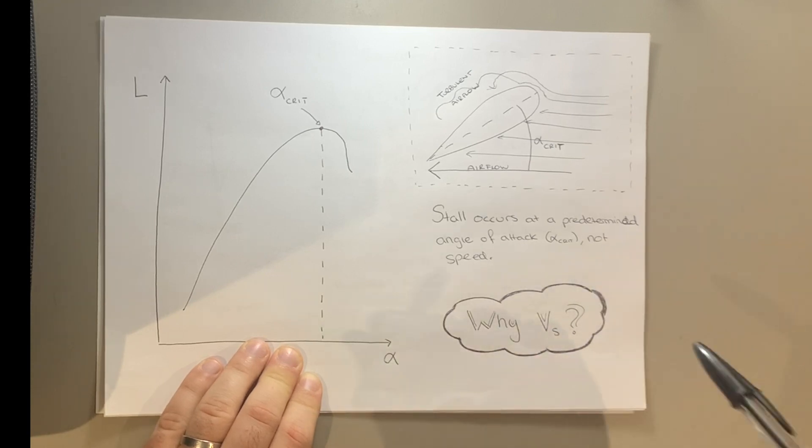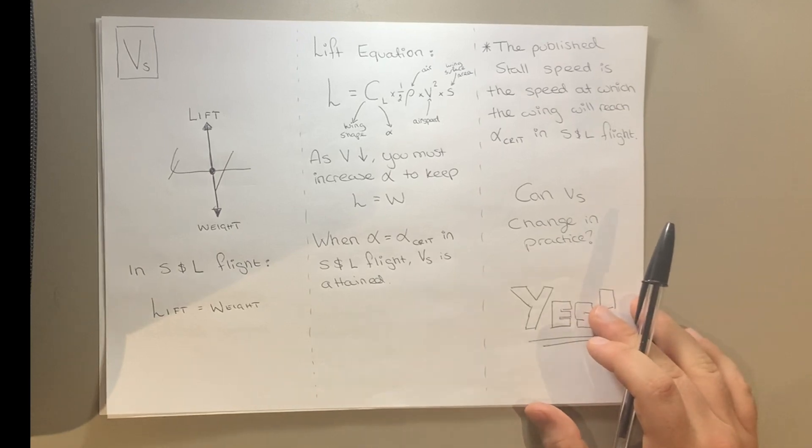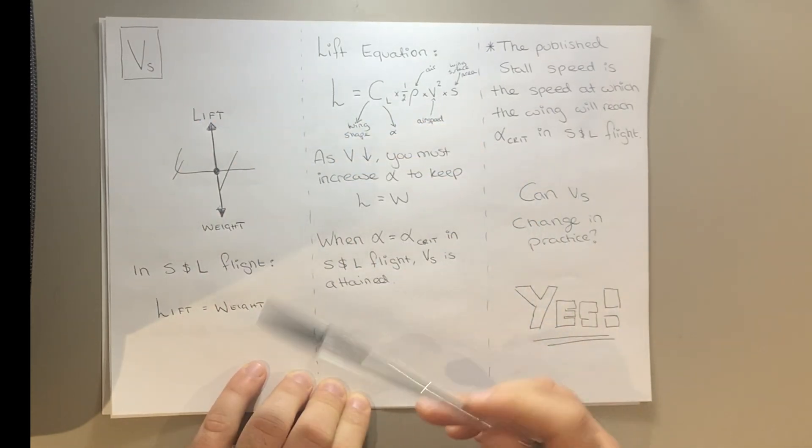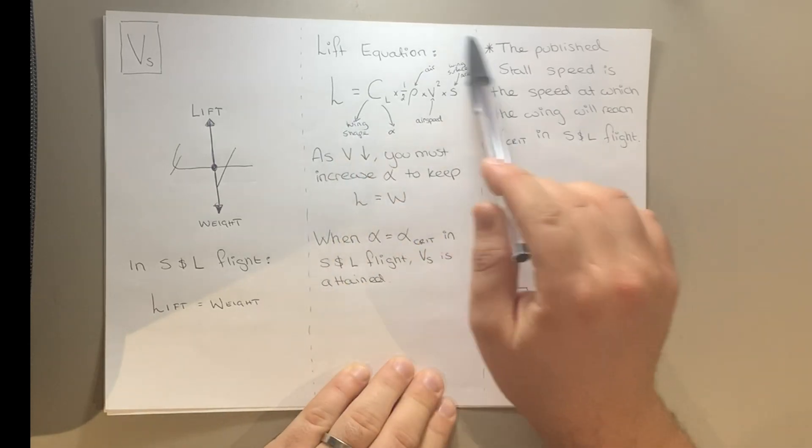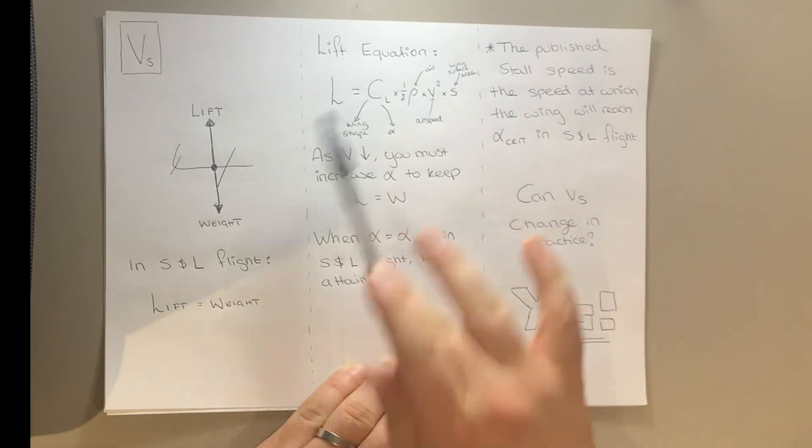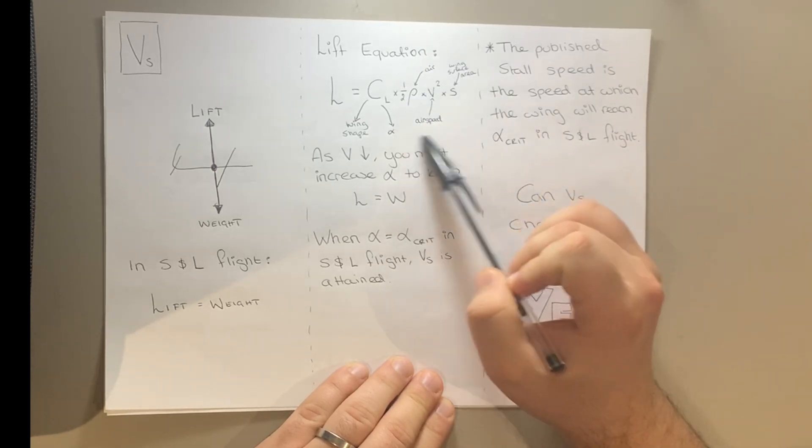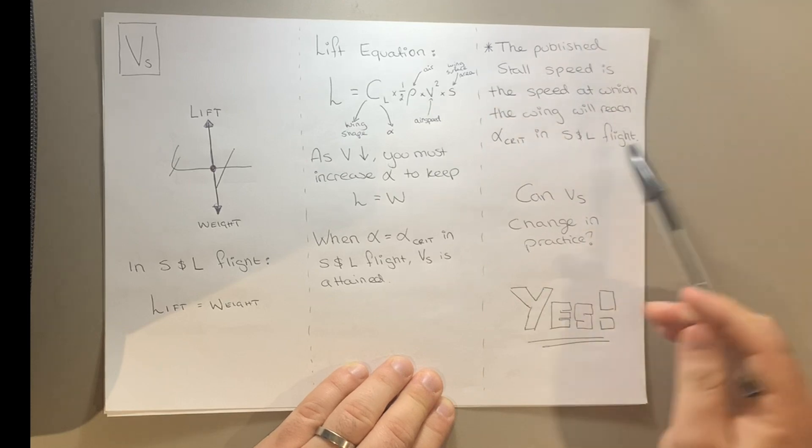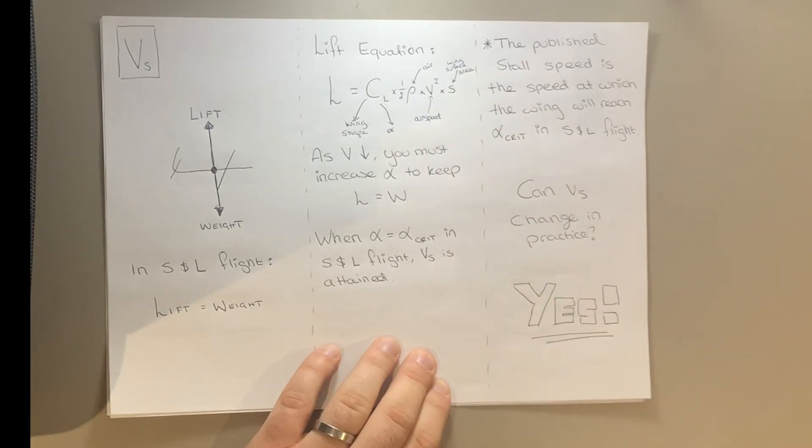So that brings us back to our question, why do we talk about stall speed then, if it has nothing to do with speed? To explain that, we're going to go back to another basic concept, forces in flight. I'm not going to talk about thrust and drag, just lift and weight. In straight and level flight, lift equals weight. Pretty basic stuff, high school physics, and basic private pilot stuff. So let's move that to the lift equation. Lift has this equation right here. We've got the coefficient of lift, which is dependent on the wing shape and alpha, the angle of attack. The air density, known as rho. V, which is our airspeed, and the wing surface area. Assuming we don't use flaps, we can't change the wing shape or the surface area. We're assuming we're flying in the same air mass or volume of air, so the density should stay constant. So as a result, there are only two things we can change, angle of attack and airspeed.